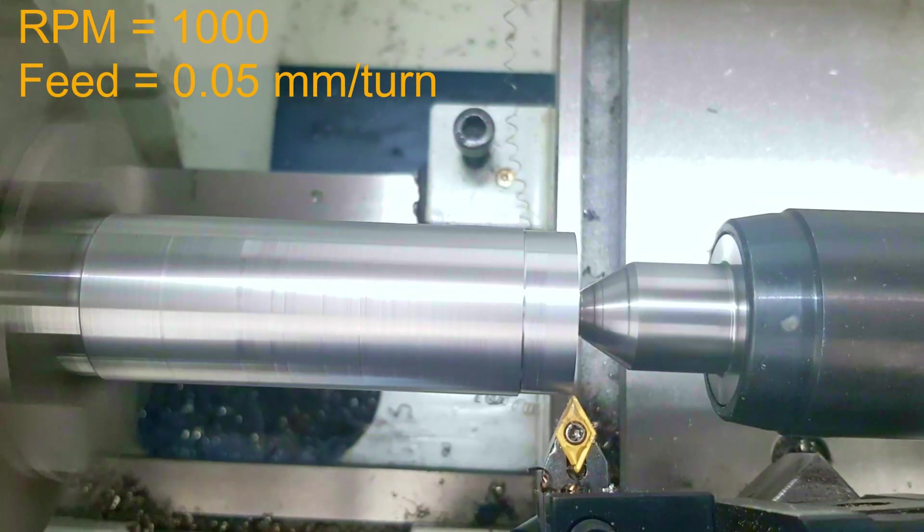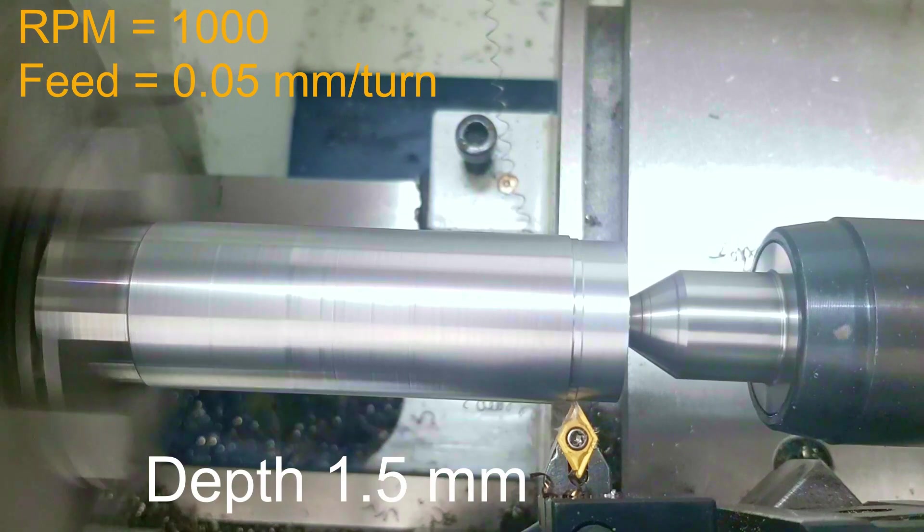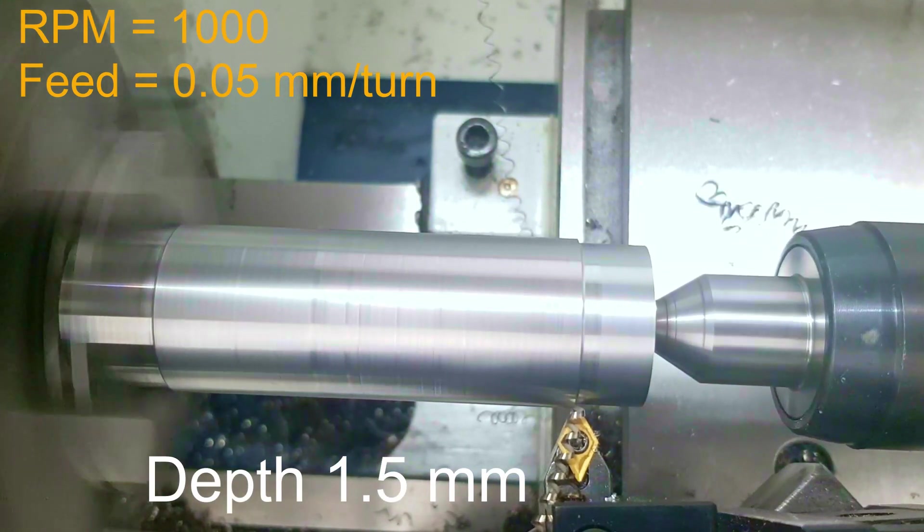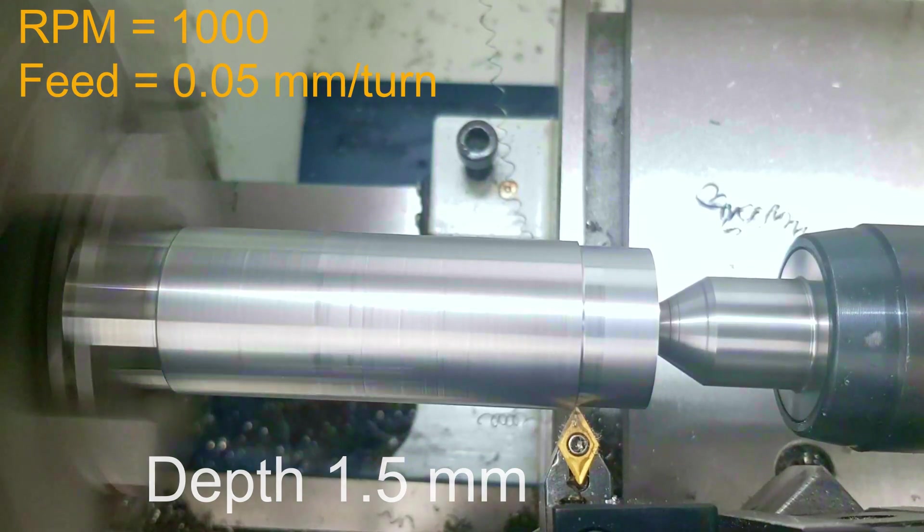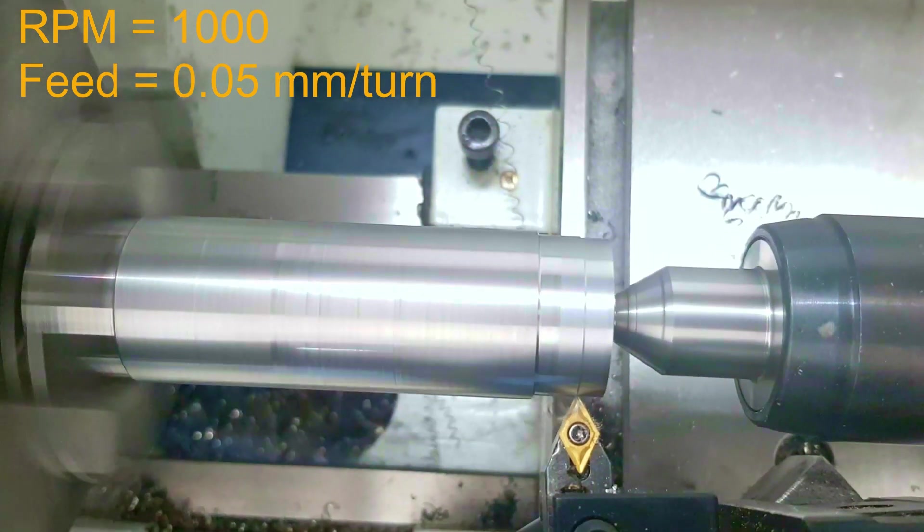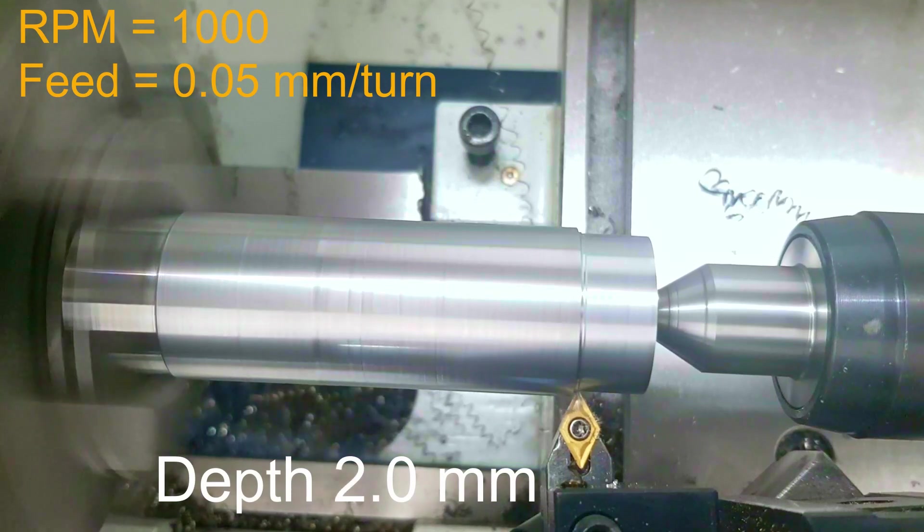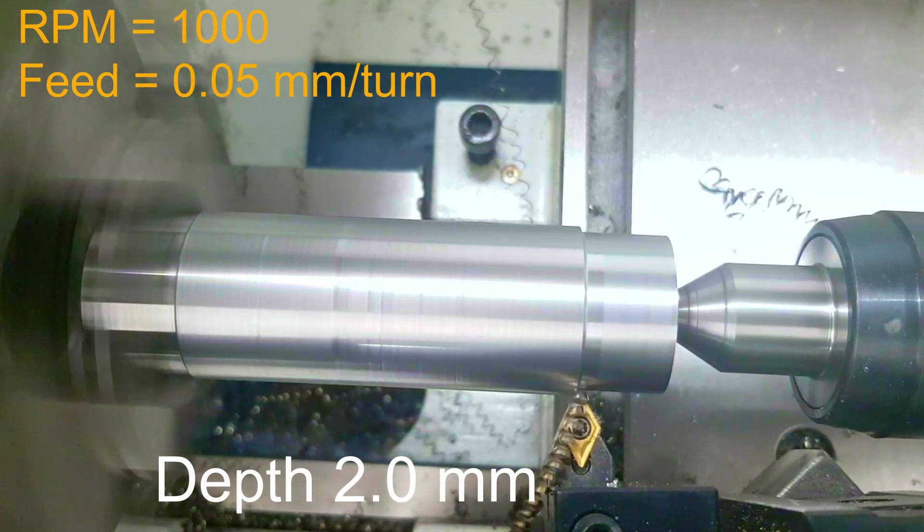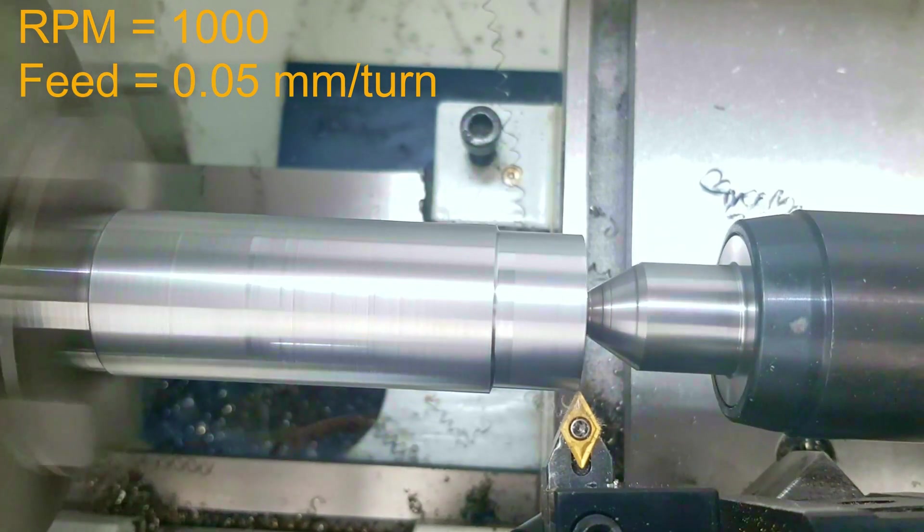For now it performs quite well. At the moment we are at 1.5 mm and these dimensions, these steps, are very easy for both the lathe and the carbide insert. You can see it cuts really easily.